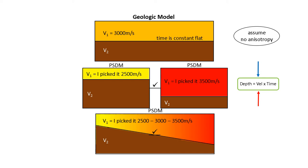If I picked it too fast at 3500 meters per second, now it's too deep because I put in a too fast velocity value. Therefore, the depth is too great when you multiply it by the constant time to the reflector. The correct answer would only be here in the middle if I picked it at 3000 meters per second. That would be the only way to get the correct depth.